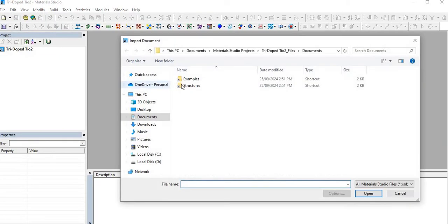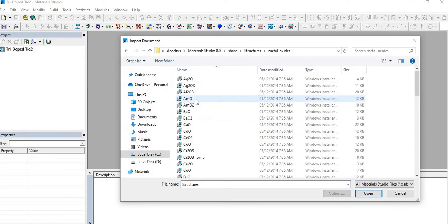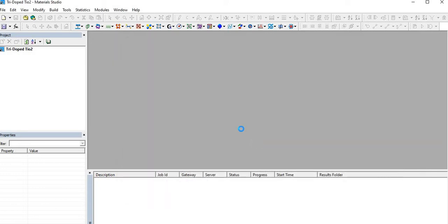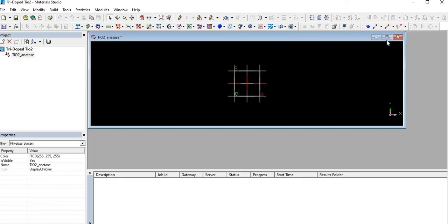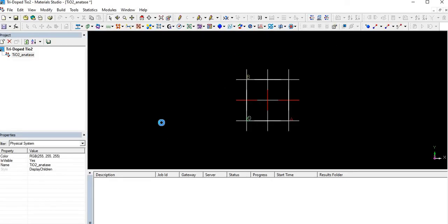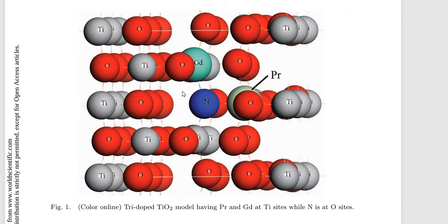For this, firstly we have to import TiO2 in anatase phase. Since we know TiO2 is a metal oxide, it's a unit cell of TiO2.